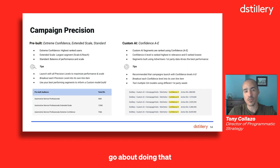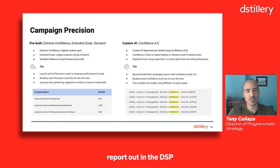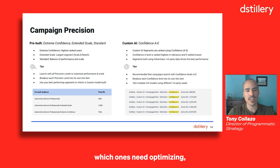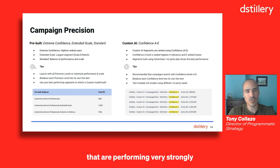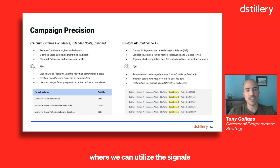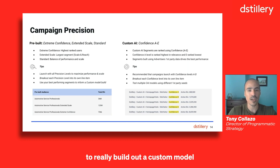The best way to go about doing that is to make sure you're breaking each one out into their own individual line items, so that you can actually report out in the DSP what results each audience is driving, which ones need optimizing, and where budgets should be allocated. You can take this up another level by identifying custom audiences performing strongly for your brand and linking up with one of our client success managers, where we can utilize signals within those pre-built audiences to build out a custom model to expand on that existing performance.